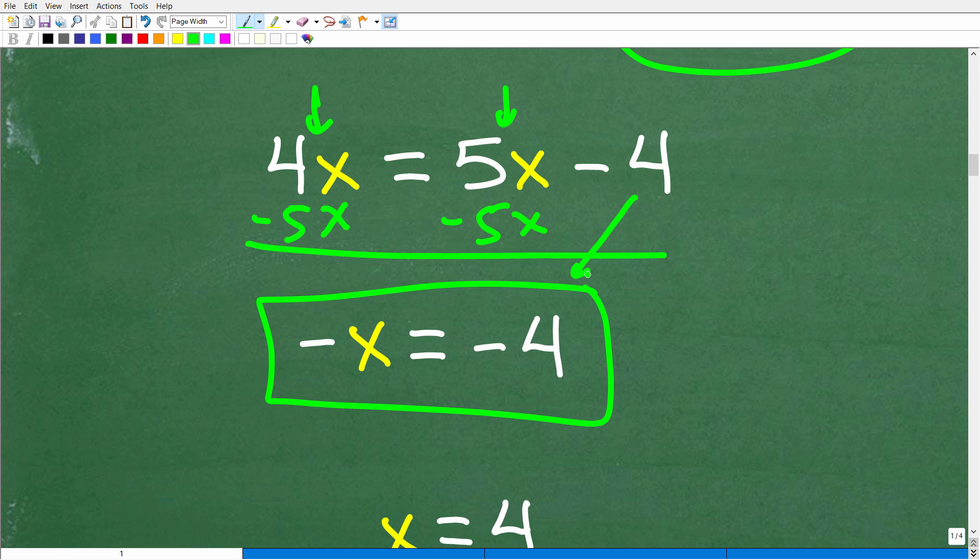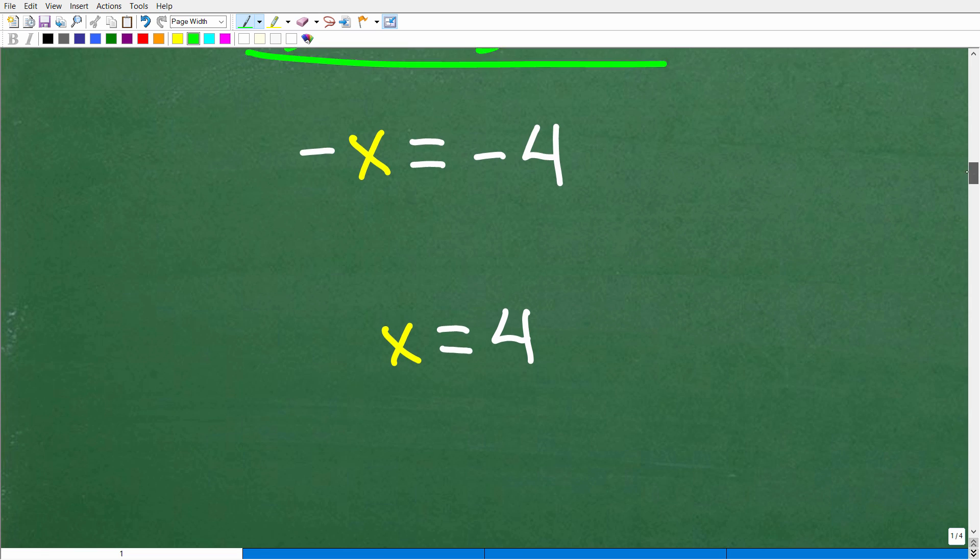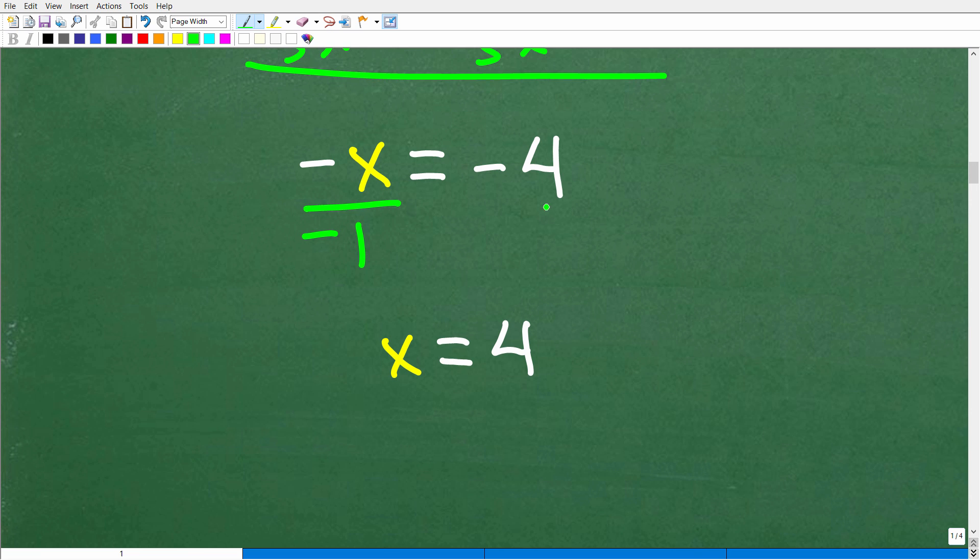So this is negative x or negative 1x equal to negative 4. So here, it looks like we're done, but we're not done because we're solving for x, not negative x. So how do I get a positive x? Easy. All I have to do is divide both sides of the equation by negative 1. So negative x divided by negative 1 is a positive x. And negative 4 divided by negative 1 is a positive 4. So x is equal to 4.